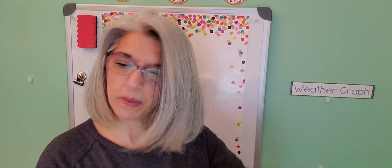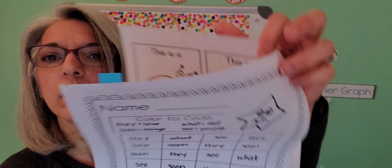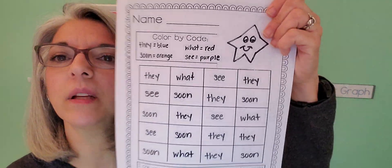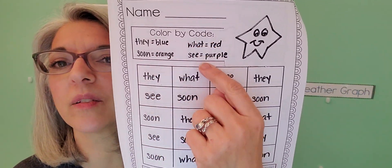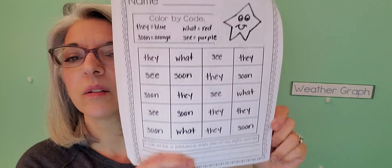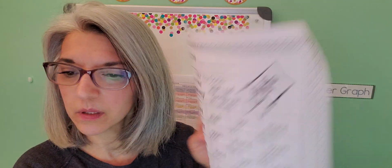Your third must-do activity is color by code. I know there are a few of these in here, but this is the one with 'day,' 'soon,' 'what,' and 'see.' So you're going to color those by code.